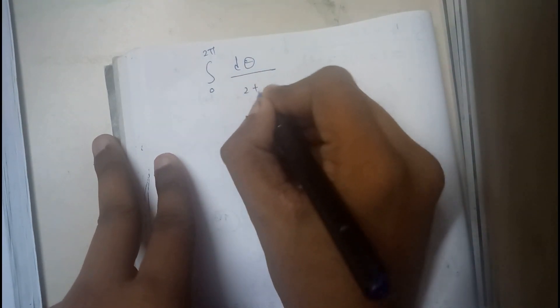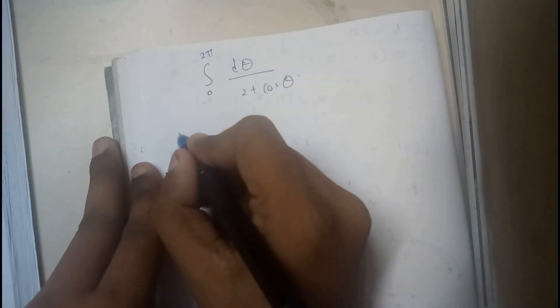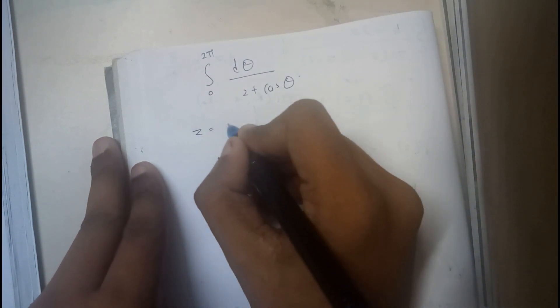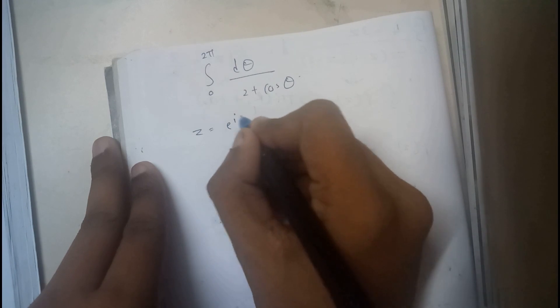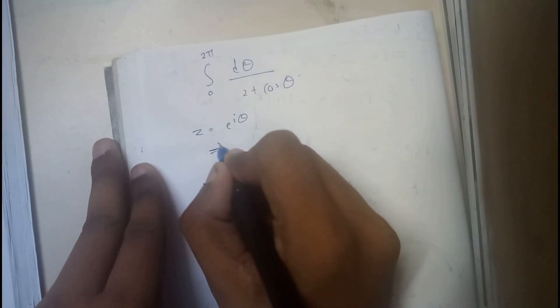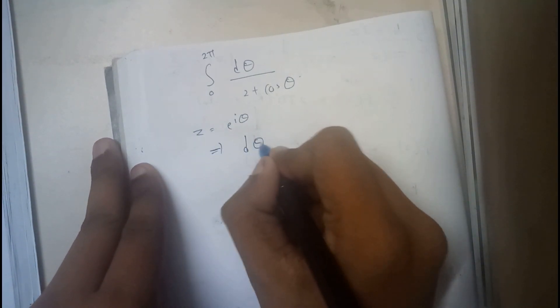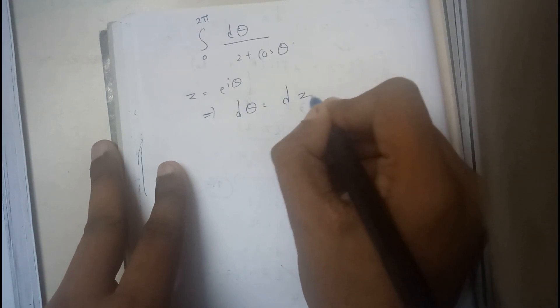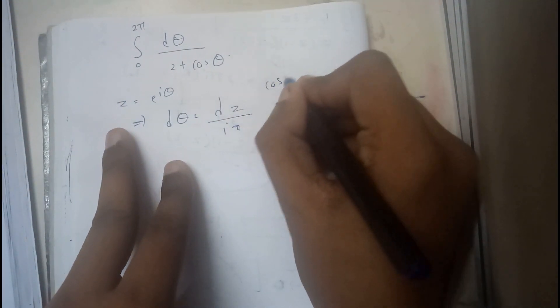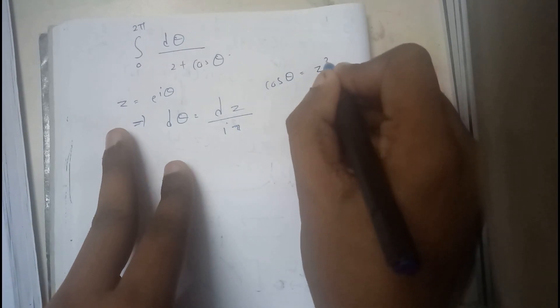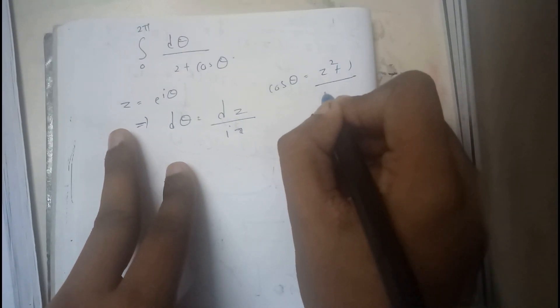So basically, integral 0 to 2π, the given question is luckily in terms of cos. Okay, so I have told you that z equals e^(iθ), from that we got dθ equals dz/(iz).